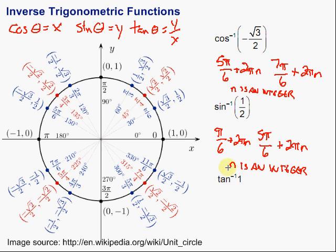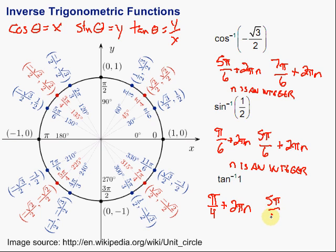Finally, the inverse tangent of 1. The tangent is y over x, so I need to look for where both coordinates are the same, because dividing something by itself gives me 1. There's one where they're both the square root of 2 over 2, and another where they're both the same. My two values are π over 4 — plus 2π times n — and 5π over 4, plus 2π times n, where n is an integer.